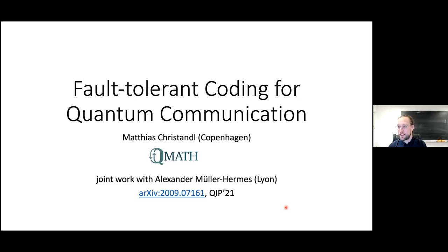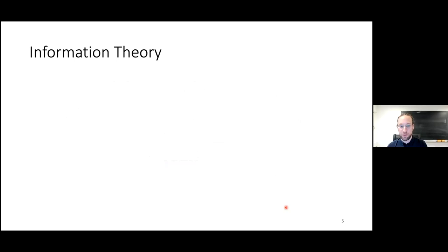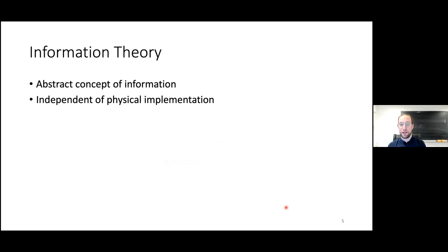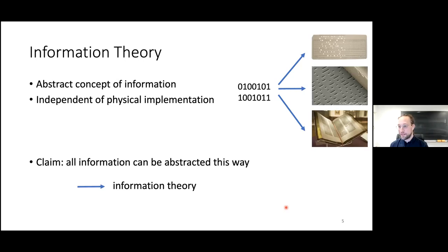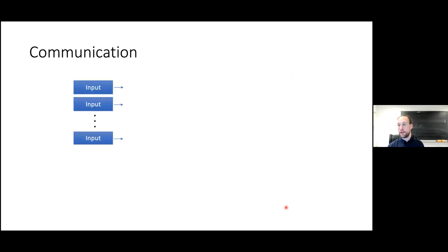Communication is part of information theory. The key idea of Claude Shannon in the 1940s was to abstract the concept of information from its physical implementation. You can represent a string of bits on a punch card, a magnetic drive, or your phone — the concept of information is independent of where it's represented. The claim was that all information can be abstracted this way, and that leads to information theory.